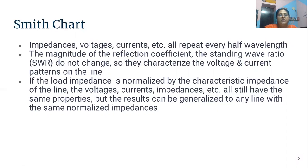The magnitude of the reflection coefficients and the standing wave ratio, which is known as SWR, do not change. They categorize the voltage and current patterns on the line. The standing wave ratio is a ratio of the incident voltage and the reflection voltage. When mismatch of the load occurs in a transmission line, a part of the incident wave is reflected back from the load. The superimposition of the incident wave and the reflected wave causes standing wave motion — these are points which do not move.